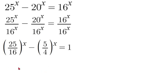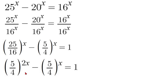Now another thing we can do to simplify this is 25 and 16 both have a perfect square. So we can rewrite 25 over 16 as 5 over 4 squared. We have 5 over 4 squared or to the power of 2x minus 5 over 4 to the power of x is equal to 1.